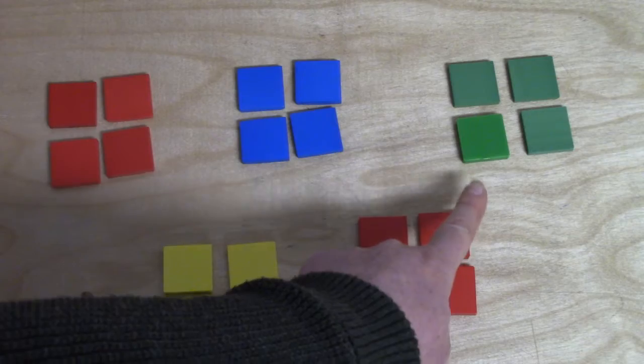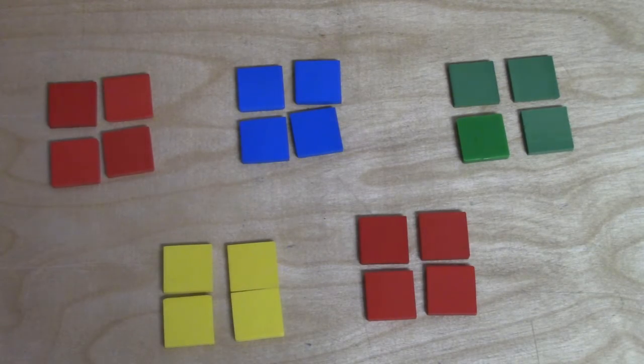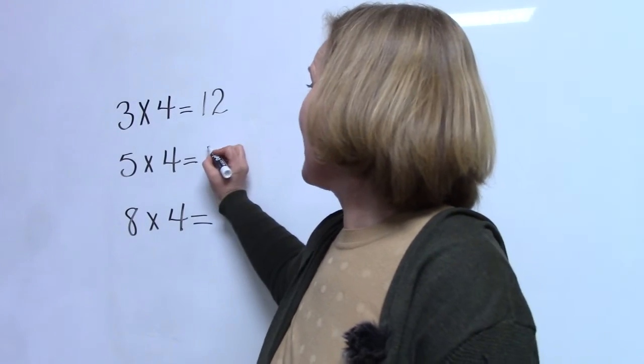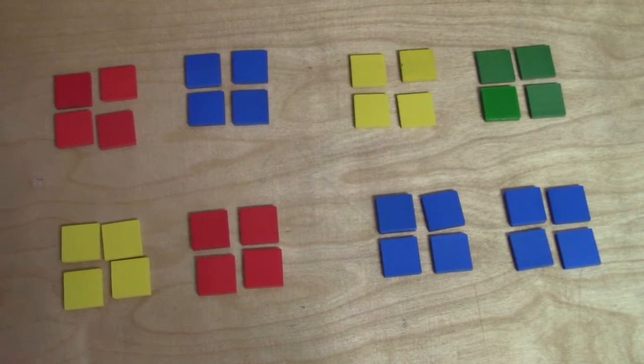Five groups of four equals twenty. Four, eight, twelve, sixteen, and twenty. Five groups of four is twenty.